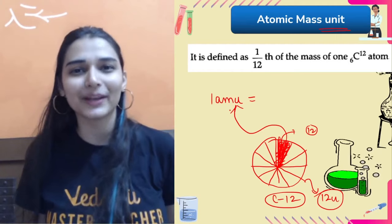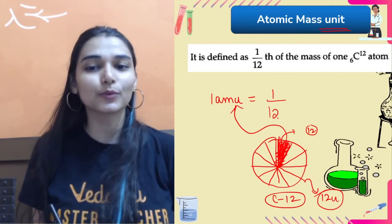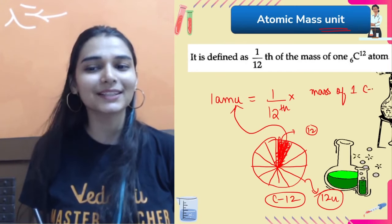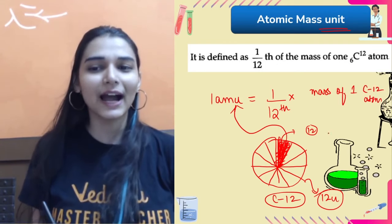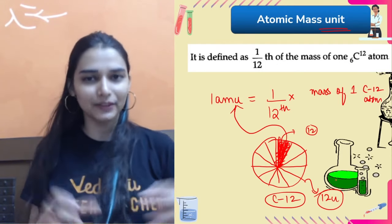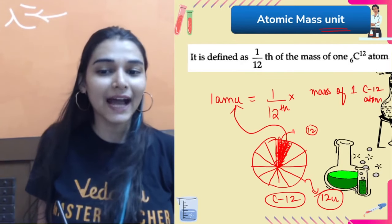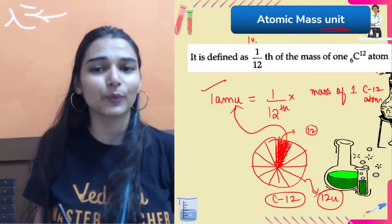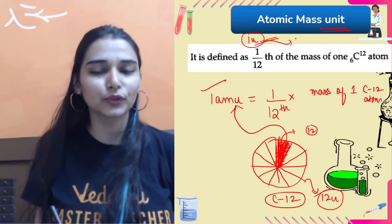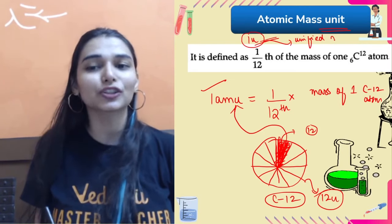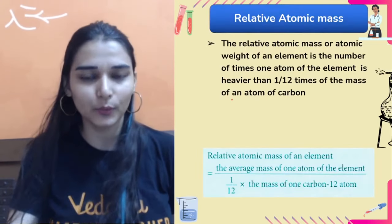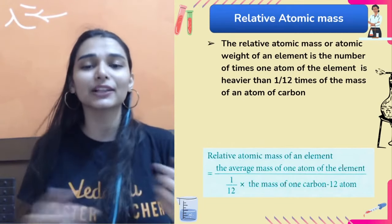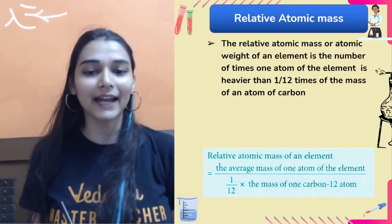So one AMU is defined as 1/12 of the mass of one carbon-12 atom. You can also write it as 1 u (unified mass unit). Keeping this one AMU as a standard, we calculate the masses of all other atoms — that is how we give the relative atomic mass of an element.